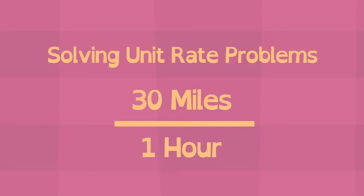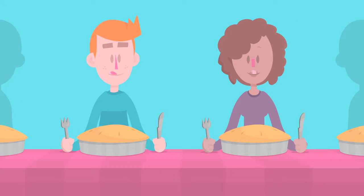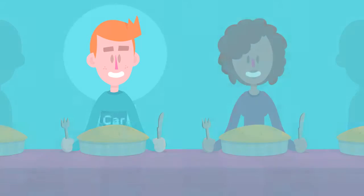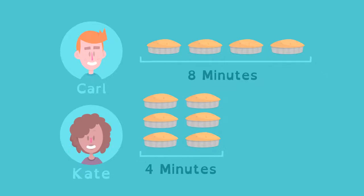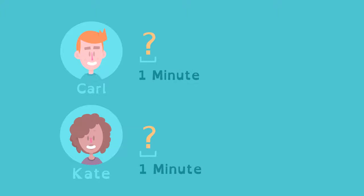Kate and Carl have entered a pie eating contest. Carl can eat four pies in eight minutes. Kate can eat six pies in four minutes. Sounds like Kate will win, but here's a question: how many pies can each of them eat per minute?